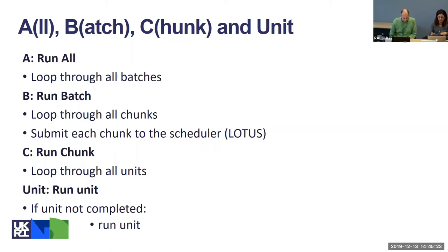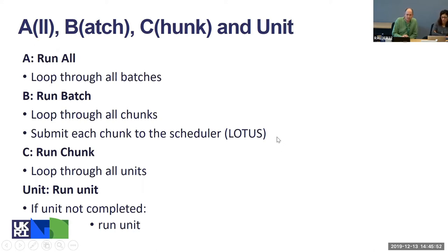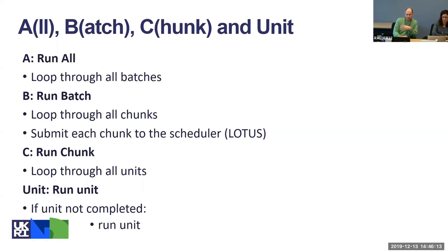ABC stands for All, Batch, Chunk. 'All' is when you loop through a set of batches; 'Batch' is a set of chunks; 'Chunk' is the level at which you submit the job to the Lotus cluster. On each node, the chunks run and each chunk is made up of a set of units. When running a unit you test if it's completed — if it has previously completed you skip it; if not, you run it. Hence: All, Batch, Chunk, Unit.